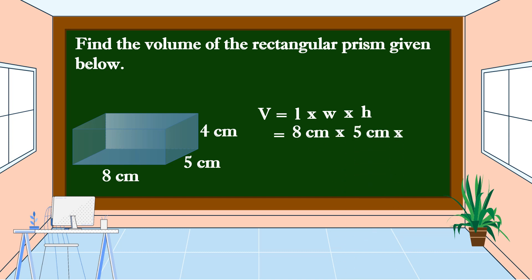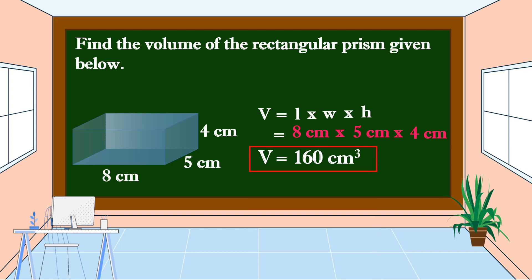Let's find the product: 8 centimeters times 5 centimeters is equal to 40 square centimeters, times 4 centimeters. The volume is equal to 160 cubic centimeters. This is the volume of this rectangular prism.